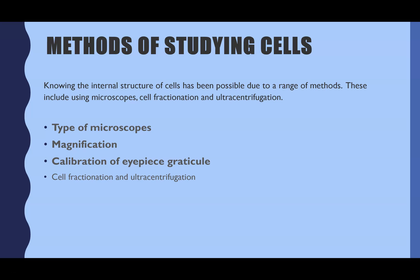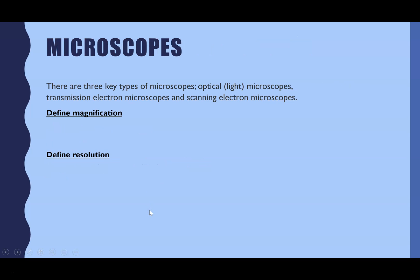This all falls under Topic 2 within the methods of studying cells. Once we've gone through the cells, it's about knowing how scientists discovered the internal structures that cells have — worked out through using microscopes and cell fractionation and ultracentrifugation. This video focuses on types of microscopes, magnification, and calibration of the eyepiece graticule. There are three key types: the optical or light microscope, and two types of electron microscope — transmission and scanning.